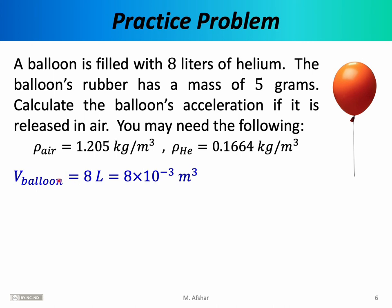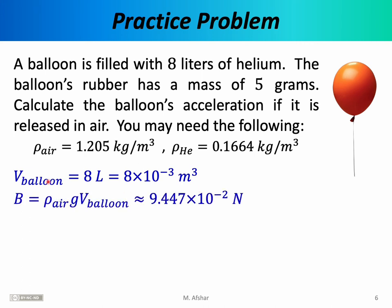Let's begin by calculating the volume of the balloon. We know the volume is 8 liters. There are 1,000 liters to a cubic meter — an important conversion factor to memorize — so the volume of the balloon is 8 × 10⁻³ cubic meters. Next, let's calculate the buoyant force. According to the formula, B = ρ·g·V. Since the balloon is floating in air, we use the density of air. The entire volume is submerged in air, so the displaced volume equals the balloon's volume. Plugging those numbers in, the buoyant force is 9.447 × 10⁻² newtons.